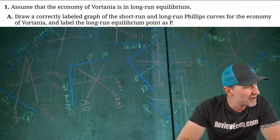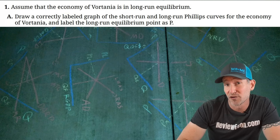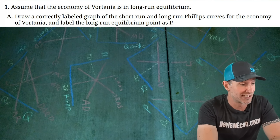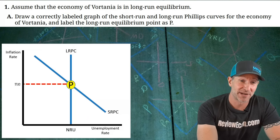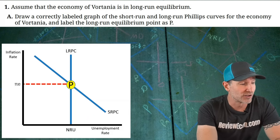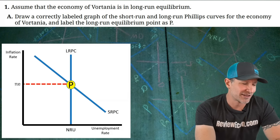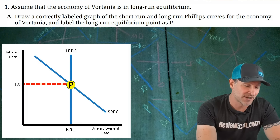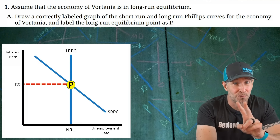Alright, let's jump into question one. Vortania is a country in long-run equilibrium. We start by drawing a long-run and short-run Phillips curve and showing the long-run equilibrium with a point labeled P. We have a downward-sloping SRPC, a vertical long-run Phillips curve, and the natural rate of unemployment on the x-axis. The y-axis should be labeled 'inflation rate,' and point P should be at the intersection to earn those two points.